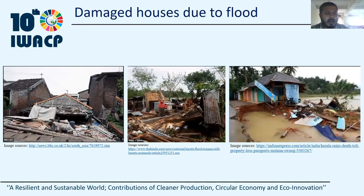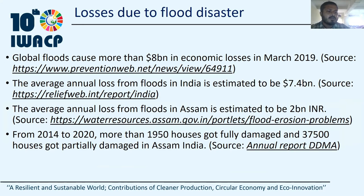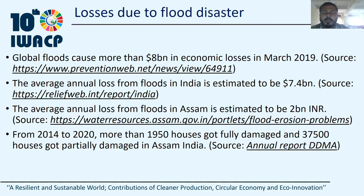There are some figures of affected houses due to flood hazard. Due to flood, the global economic loss is estimated at 8 billion US dollars in March 2019. In India, the average annual loss is estimated at more than 7.4 billion dollars. The average loss due to flood in Assam, a state of India, is estimated at 2 billion Indian rupees. From 2014 to 2020, more than 1,950 houses got fully damaged and 37,500 houses got partially damaged. Due to flood, every year many infrastructures are affected, and the government is sanctioning huge amounts of restoration costs which also affect the economy of the country.